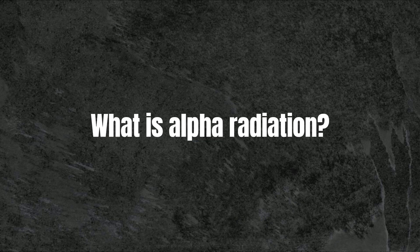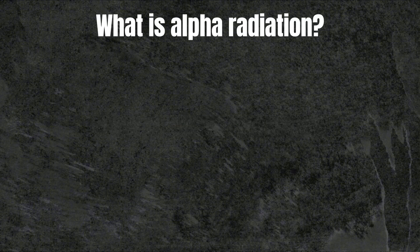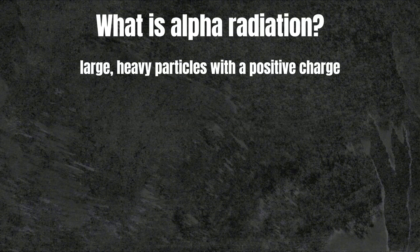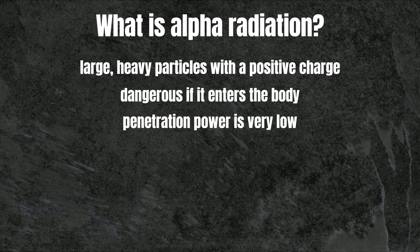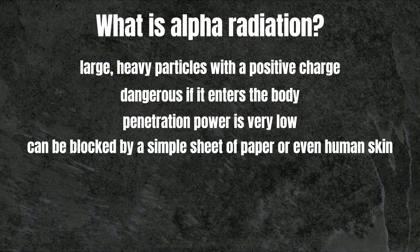What is alpha radiation? Alpha radiation consists of large, heavy particles with a positive charge. It is highly dangerous if it enters the body, but its penetration power is very low. It can be blocked by a simple sheet of paper or even human skin.